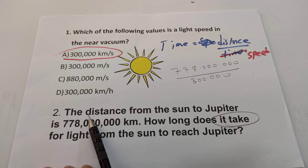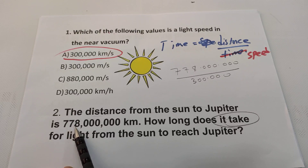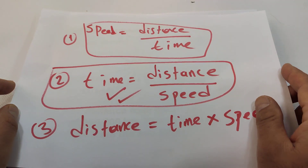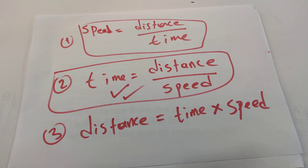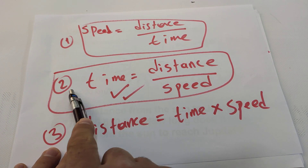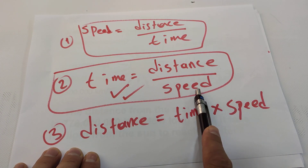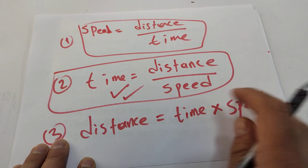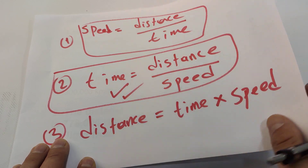The distance from the sun to Jupiter is 778 million kilometers. How long does it take for light from the sun to reach Jupiter? We have three formulas: speed equals distance over time, time equals distance over speed, and distance equals time times speed. We are going to use the second one because the question asks for time.